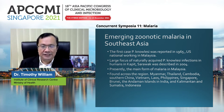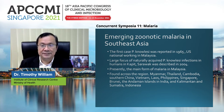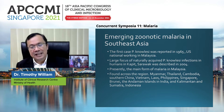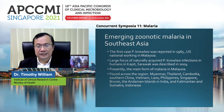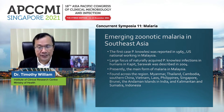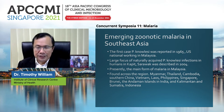Presently, the main form of malaria in Malaysia is due to Plasmodium knowlesi, and it has also been found across the region in Myanmar, Thailand, Cambodia, Southern China, Vietnam, Laos, Philippines, Singapore, Brunei, the Andaman Islands, India, Kalimantan, and Sumatra in Indonesia. As you can see, this disease is now very widespread in Southeast Asia and also in the Andaman Islands in India.